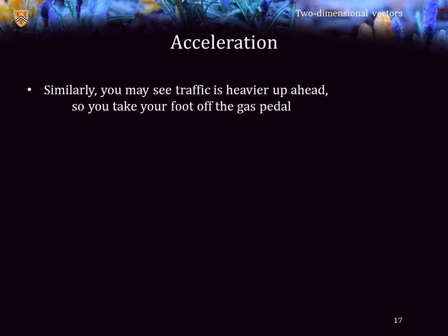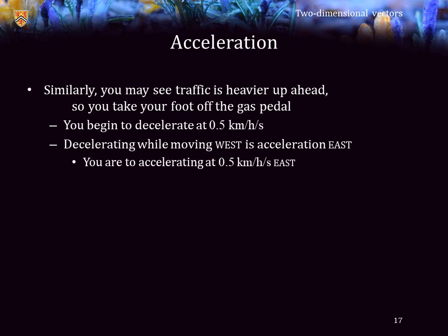Similarly, we're going down the highway and we see traffic up ahead. So we take our foot off of the gas pedal. This causes us to decelerate. Assume that we are decelerating at 0.5 kilometers per hour per second. Well, we were moving left, so a deceleration moving west is an acceleration east. So since we are always considering east to be positive, this would actually be an acceleration of 0.5 kilometers per hour per second east. Now, is acceleration an arrow or a point? Again, it's important to think of it simply as a value.